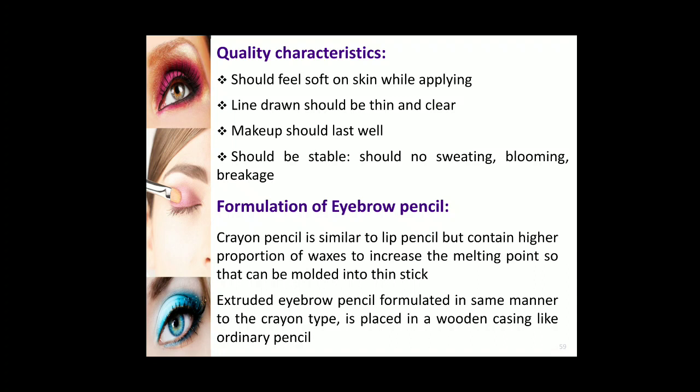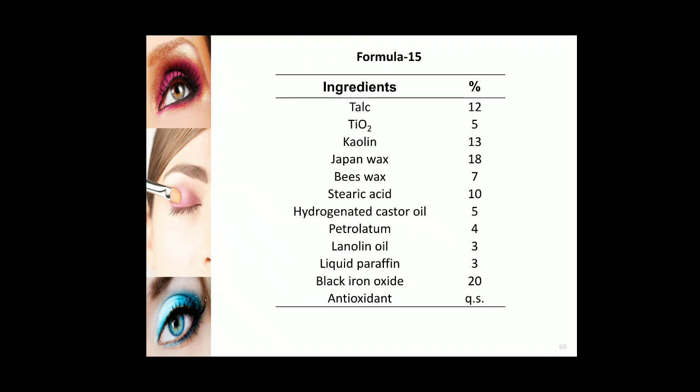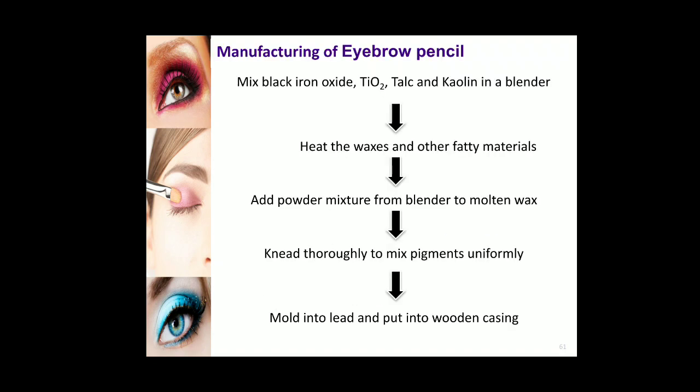The formulation of eyebrow pencil — the crayon pencil — is similar to the lipstick pencil but contains a higher proportion of waxes, which increases the melting point of the eyebrow pencil. It can be molded into a thin stick and extruded through an extruder to manufacture eyebrow pencils. Eyebrow pencils are hard crayons containing a higher percentage of wax and generally black or brown pigments. They are used to darken the eyebrows and impart pseudo growth if natural growth is negligible. The pencils can be easily sharpened to give an appropriate shape to the eyebrows.